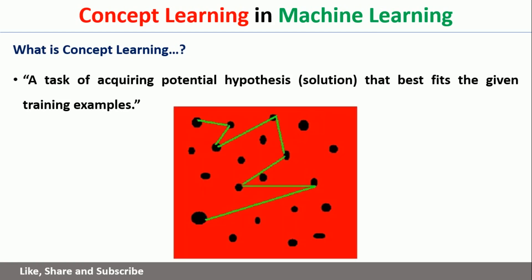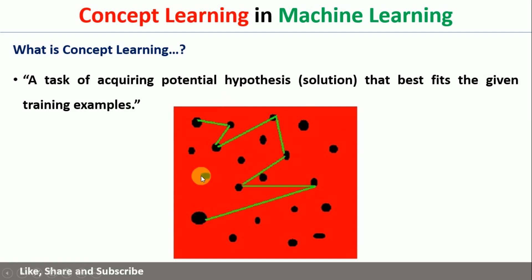Let us say that we have been given some examples and we know some set of solutions. We will start with one solution and then see whether that solution fits the given training examples or not. If it fits, we consider it as a solution. If it does not, we check the second solution, third solution, and so on until the solution is found. To understand this concept, we will take one simple example.